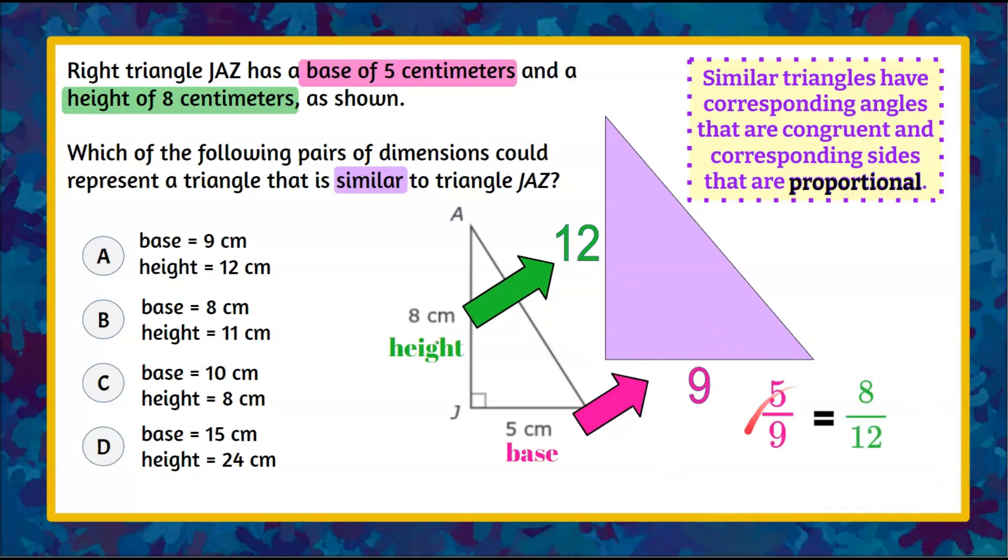To determine if this is a proportion we're going to use cross product property. So we're going to first multiply across 5 times 12 which is 60. Then 9 across, 9 times 8 and is that equal? No. 8 times 9 is 72 not equivalent to 60. Therefore we can eliminate answer choice A.